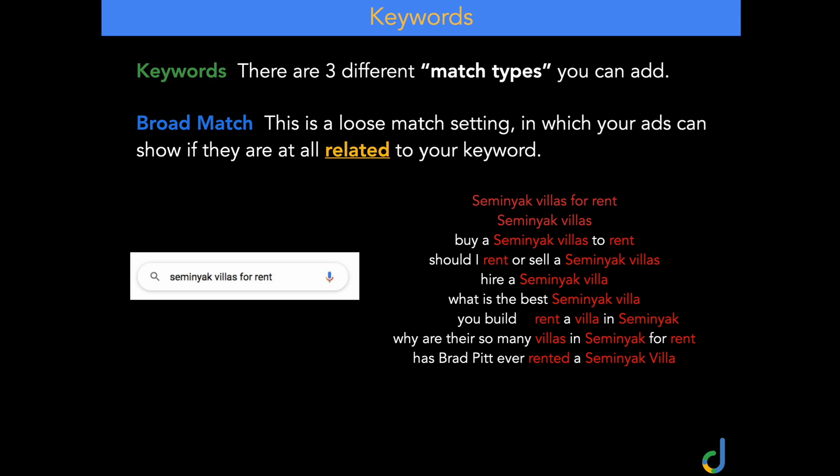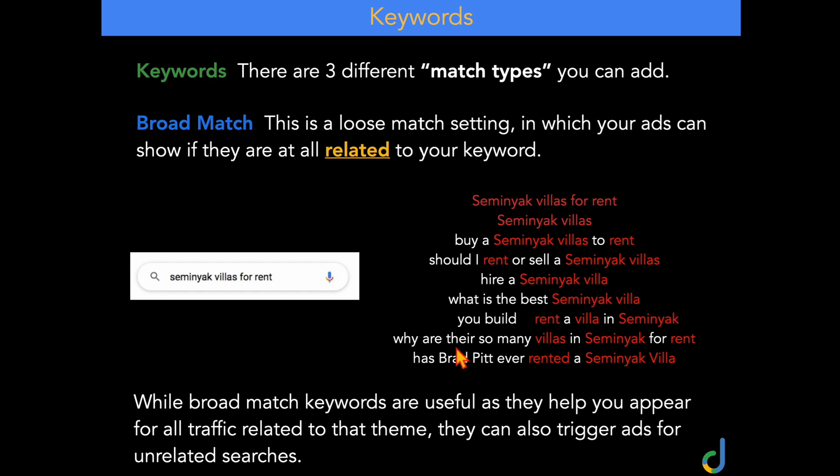Even though broad match is a very loose match setting, I do like broad match keywords in some circumstances because they help you appear for all traffic related to that keyword theme. However, you do need to be careful because they can also trigger ads for unrelated searches. What I'll usually do is use broad match targeting for the first 30 to 45 days, because it helps me discover some potential keyword themes I didn't think about. But as long as you're always running a search term audit every 72 hours, where you're adding in extra negative keywords, you can make sure you're not wasting too much money. And that's one of the actions you'll see that you need to complete every 72 hours in my Google Ads Optimization Checklist.